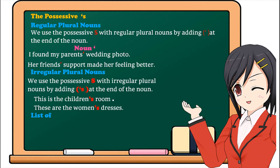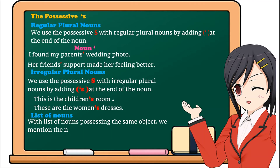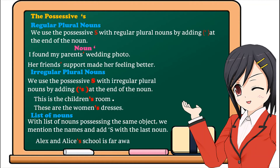With a list of nouns possessing the same object, we mention the names and add apostrophe S at the end of the last noun. For example, Alex and Alice's school is far away.